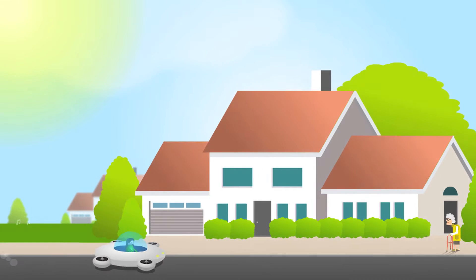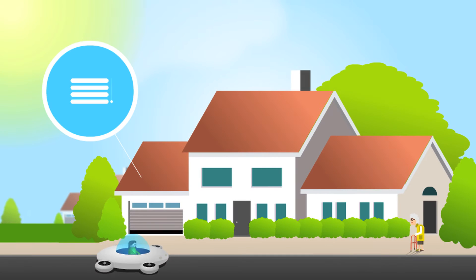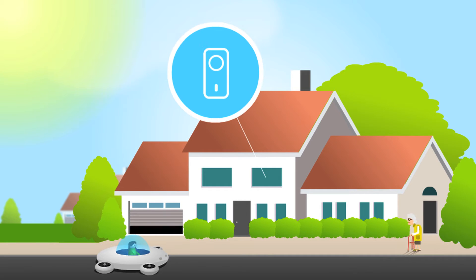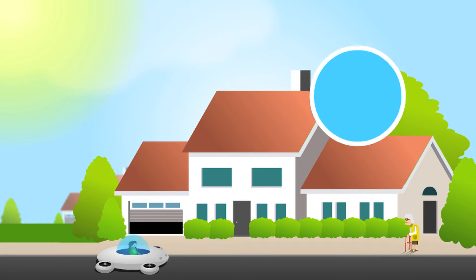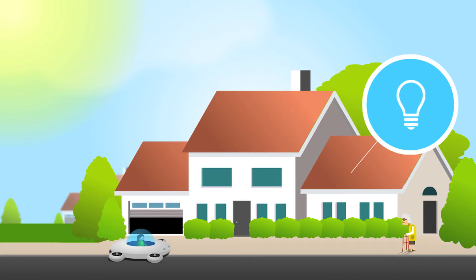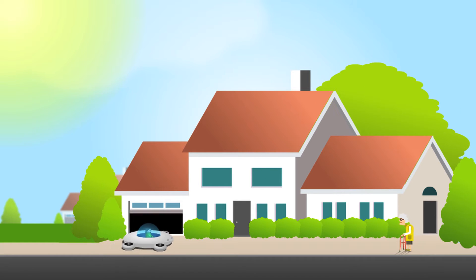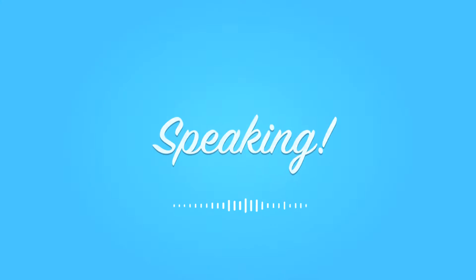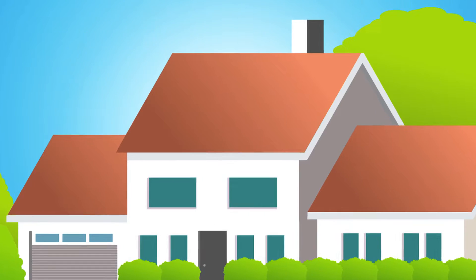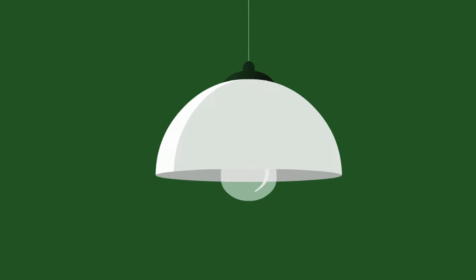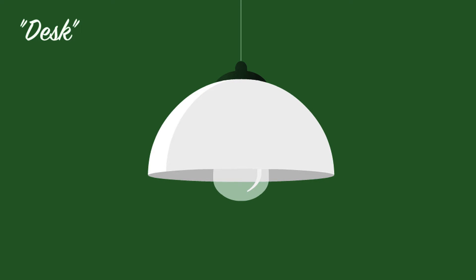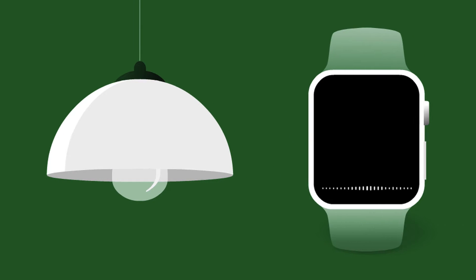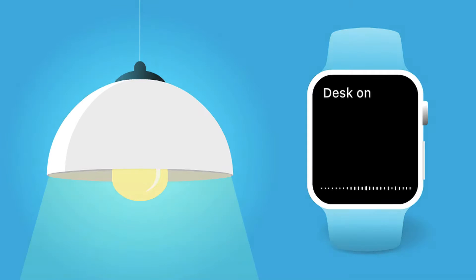Now you can control your devices and home appliances in a faster and more natural way — by speaking. For example, if you have a smart bulb called Desk, simply say "Desk On."